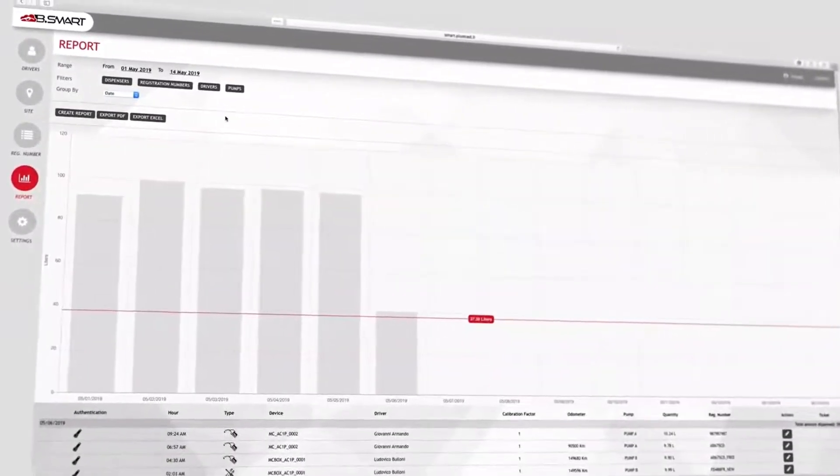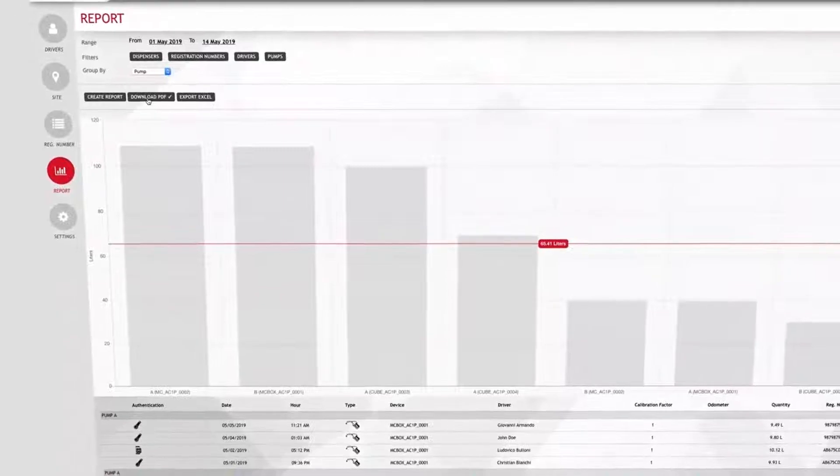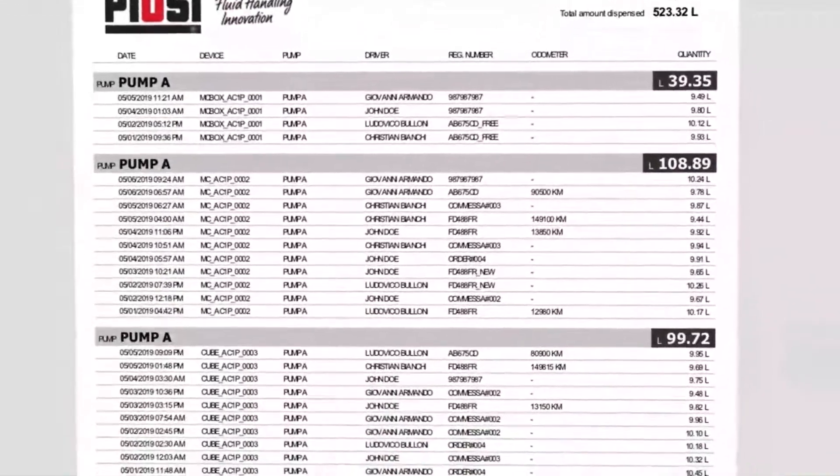Bsmart is a complete fuel management system, able to show data and reports of every transaction and to filter them by date, dispenser, driver, or vehicle, creating reports that can be immediately exported in Excel or PDF.